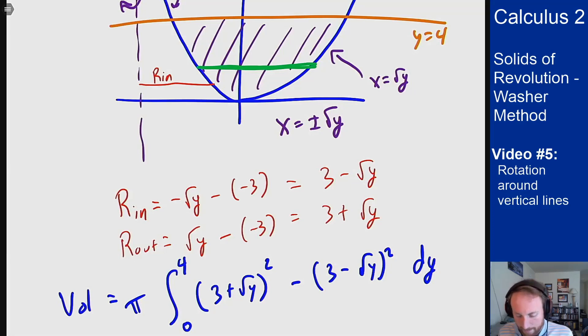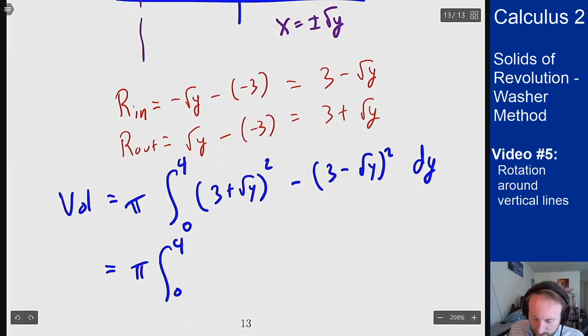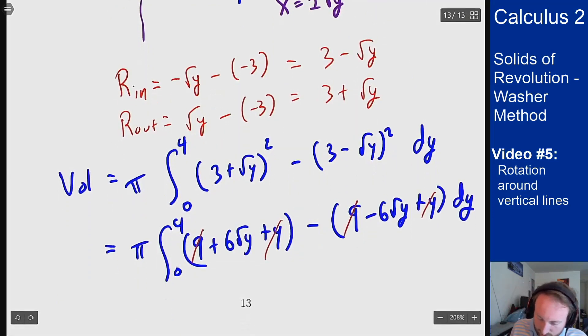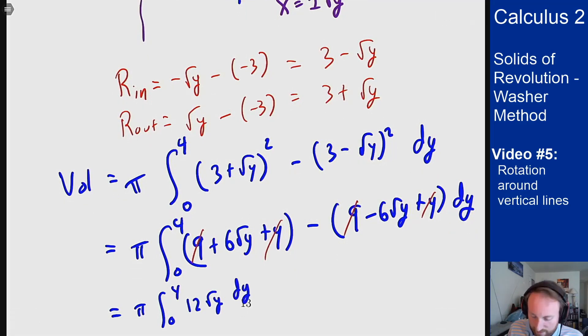We'll foil out the two terms and then both the 9 and the y's will cancel, leaving me with just pi integral 0 to 4 of 12 root y dy. I can integrate.